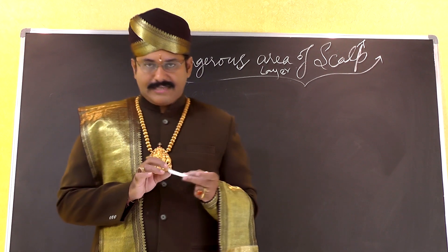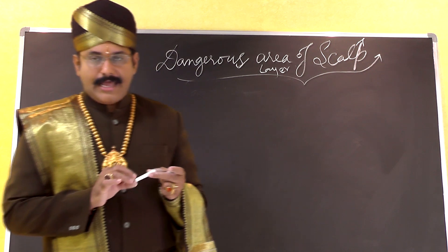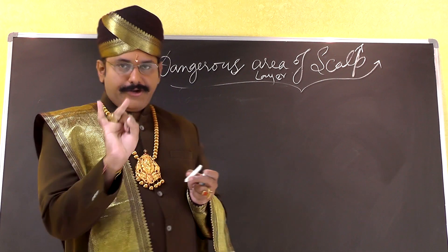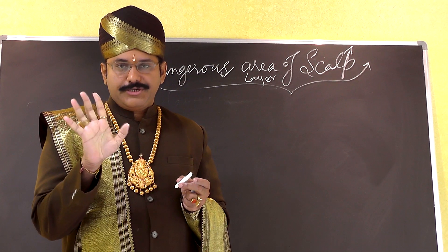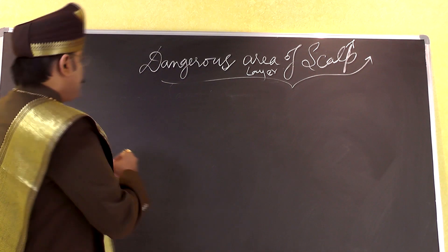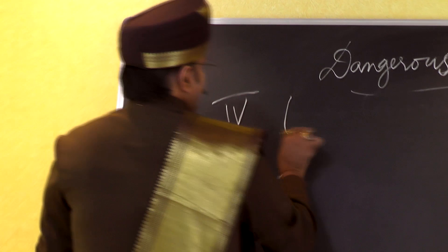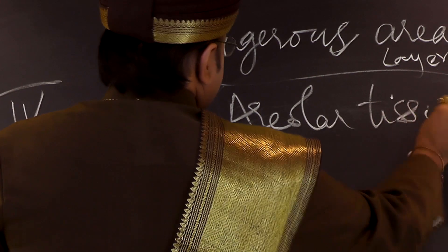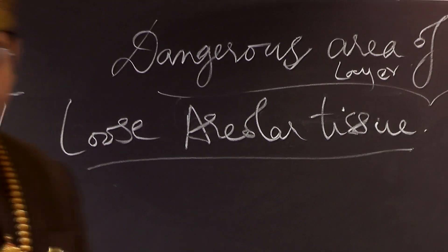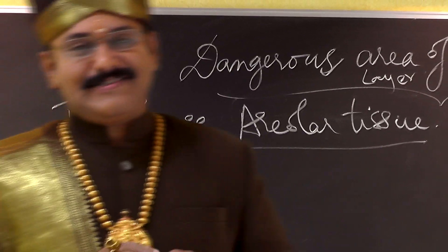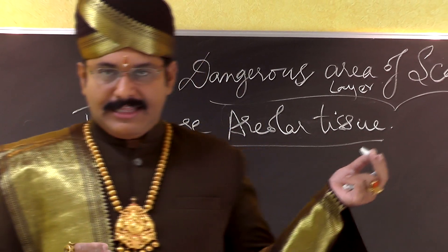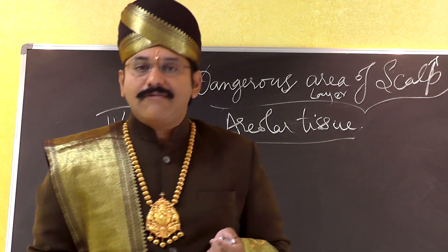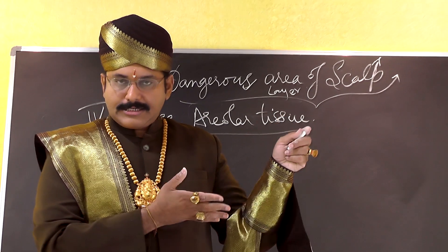The dangerous area of the scalp refers to the fourth layer of the scalp. The scalp acronym stands for: Skin, Connective tissue, Aponeurosis, Loose areolar tissue, and Pericranium. The fourth layer — the loose areolar tissue — is the most dangerous area of the scalp because emissary veins are present in this layer.